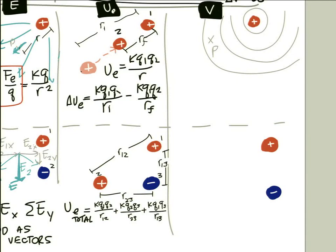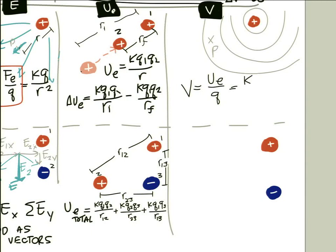Electric potential V equals electric potential energy per unit charge, U/q. Substituting the point-charge formula for U, we get V = KQ/R, where Q is the charge producing the potential and R is the distance from that charge to the point in space.